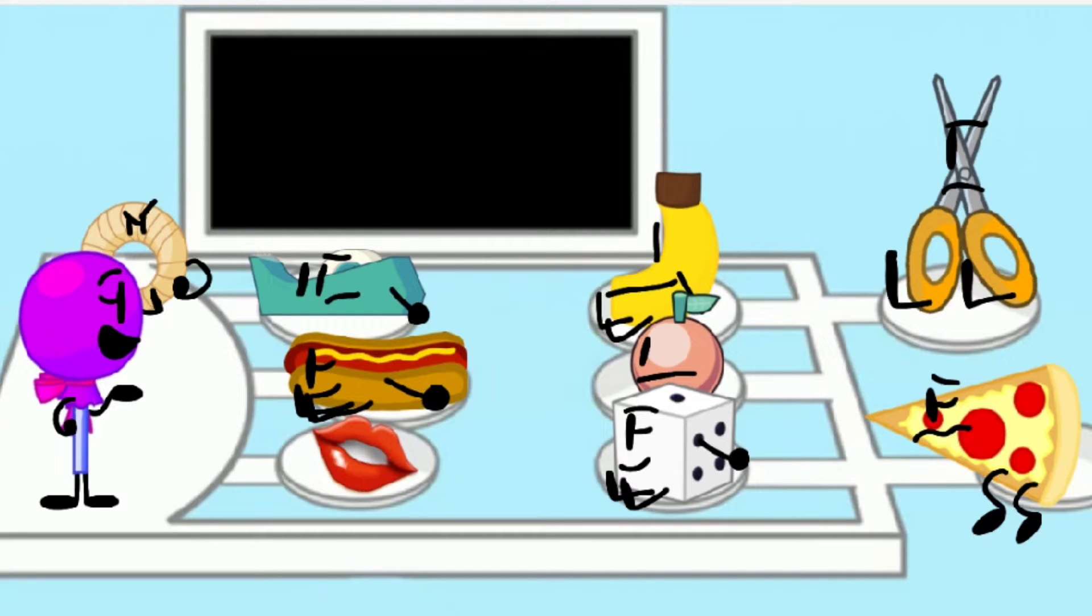So, to get started, the people safe with zero votes will be scissors and banana. People safe with one vote are hotdog and dice, and I guess orange as well. Next one safe is donut at two votes, unfortunately.